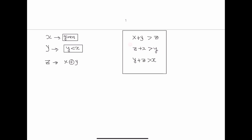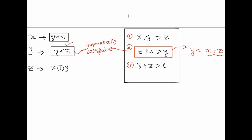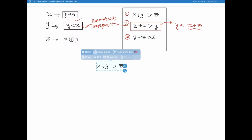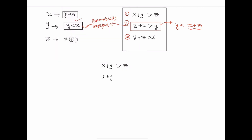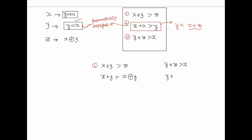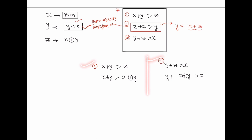So the second condition is automatically satisfied. We only need to satisfy the first and third conditions. Rewriting: x + y > x XOR y, and y + (x XOR y) > x. These are the only two conditions needed to find y. Both involve addition and XOR operations together, so there must be a relationship between addition and XOR in bit manipulation.